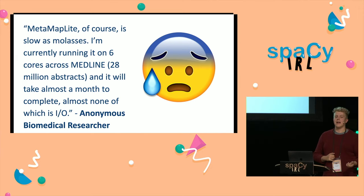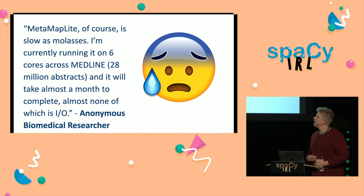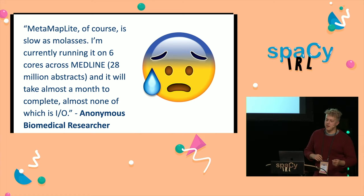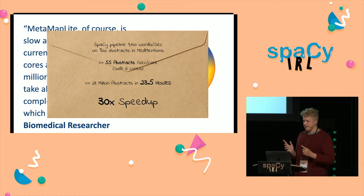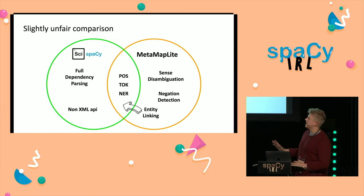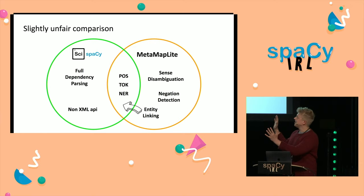When I was developing this, I found a quote from someone working on biomedical text: 'Metamap Light, of course, is as slow as molasses. I'm currently running on six cores across Medline and it will take almost a month to complete.' I want people to reject this as acceptable — it's not just the time it takes, but if something takes a month to run and one of your machines goes down, you spend all your time making systems robust and doing infrastructure work instead of your actual job. SciSpacy is about 30 times faster than Metamap Light. We're also slowly adding entity linking and negation detection, so these capabilities should converge over time without going back to month-long processing times.